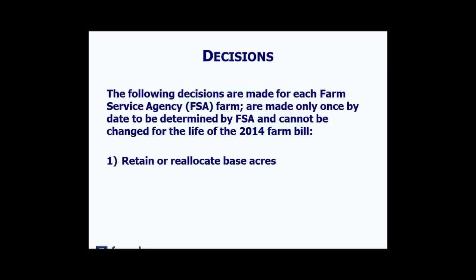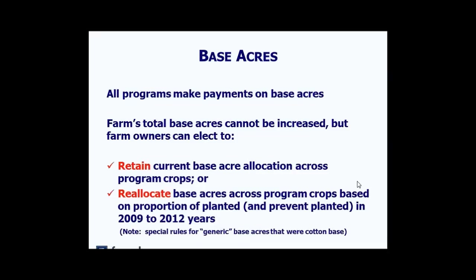There are three basic levels of decision. First, whether to retain or reallocate the base acres on the farm — all programs pay on base acres. Second, whether or not to update the payment yields for the farm. Third, the program election decision: choosing either the Price Loss Coverage Program on a commodity-by-commodity basis, the County ARC program also on a commodity-by-commodity basis, or the Individual ARC program which applies to all commodities on the farm.